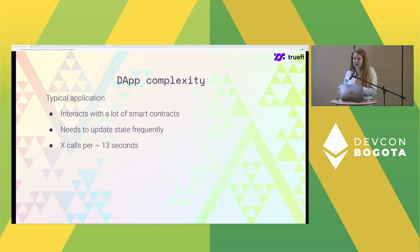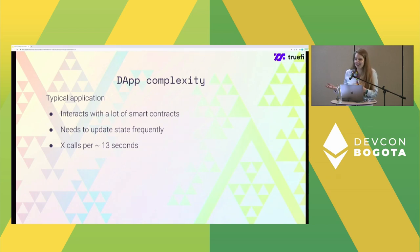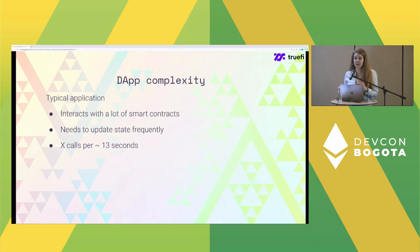A typical application interacts with a lot of smart contracts — maybe 50 or 100. It needs to update state frequently, ideally each new block. So that's x calls per 30-50 seconds — which is a lot.